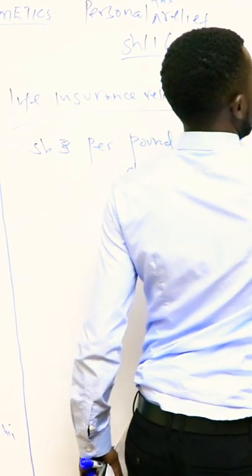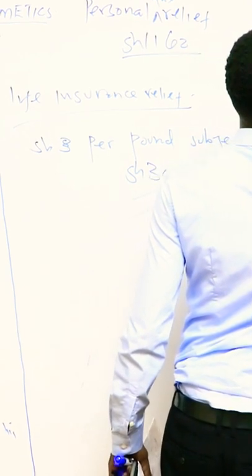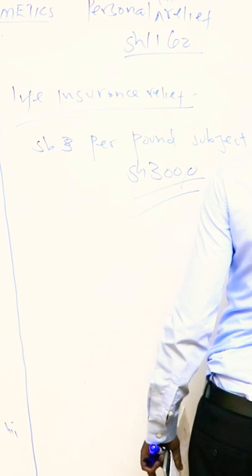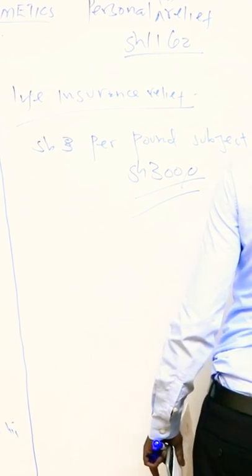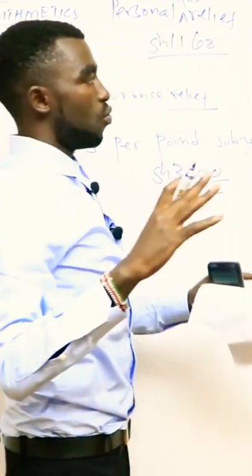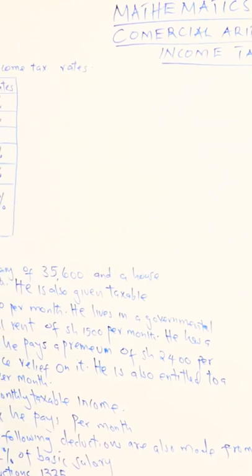It is given as salary plus all allowances, then we less the nominal rent. That is when we need to calculate the taxable income.